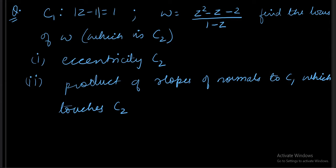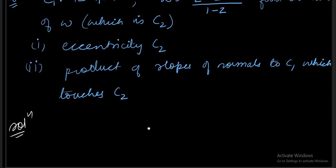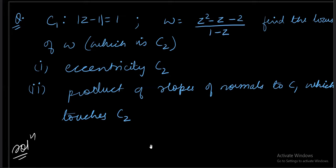To handle it first, read the question. The first information says C1 is a curve which is modulus of z minus 1 equals 1. It is a circle having the center at (1,0) and radius is also 1.